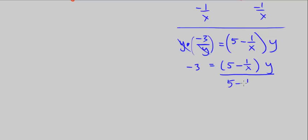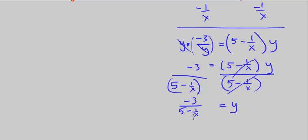When we divide both sides, we have y isolated, and we get y equals negative 3 over the quantity 5 minus 1 over x.